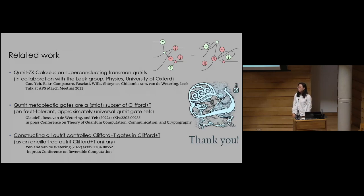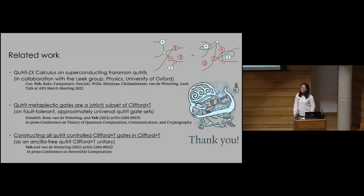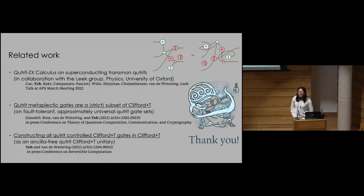Question: you gave a construction where you can implement the phase multiplier gate with the same single-qudit phase alpha as you want for the multiplier, unlike the qubit case where you need alpha over 2. Does this mean the phase multiplier gate with an S-like phase is actually Clifford in q-trits? Answer: Yes it does — a past paper had believed that gate was in the nth level of the Clifford hierarchy for n q-trits, but we show it is actually at the Clifford level.